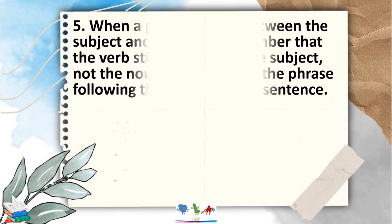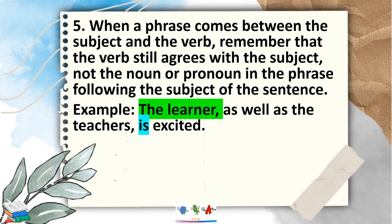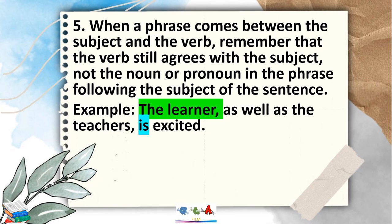Rule number 5: when a phrase comes between the subject and the verb, remember that the verb still agrees with the subject, not the noun or pronoun in the phrase following the subject. For example, 'The learner as well as the teacher is excited.' We use 'is' because our main subject is 'the learner,' not 'the teacher.' The teacher is just a phrase that comes between the subject and the verb. Therefore, we focus on the subject 'learner,' which is singular, so it takes a singular verb: 'is.'